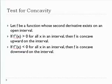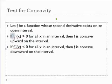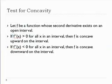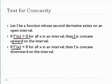When we do tests for concavity, we are going to look at the second derivative of the function. If the second derivative is positive, then the function is concave up on that interval. And if the second derivative is less than zero, or negative on an interval, then the function is concave down. We're going to use this to do an analytic test — we're going to use the second derivative.